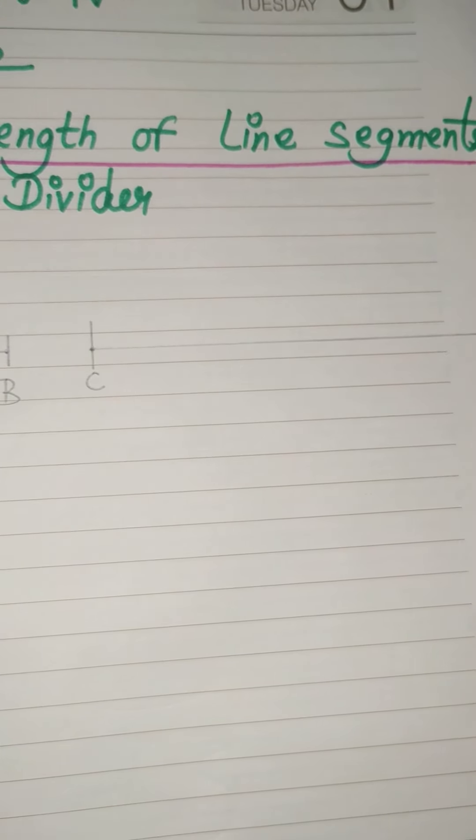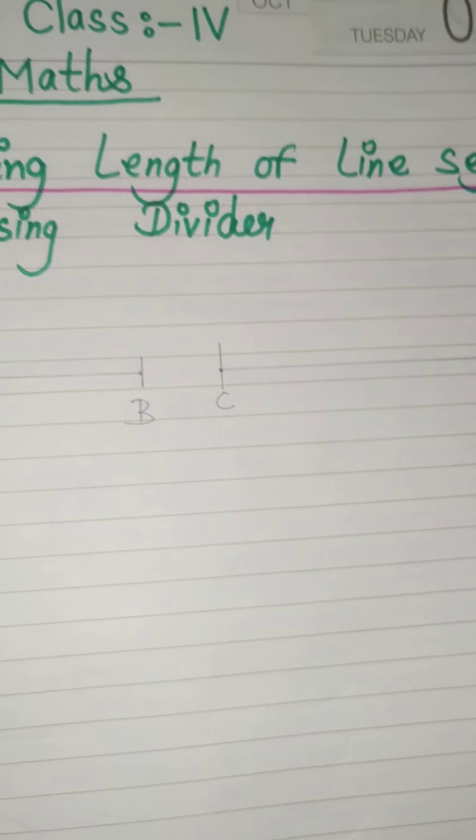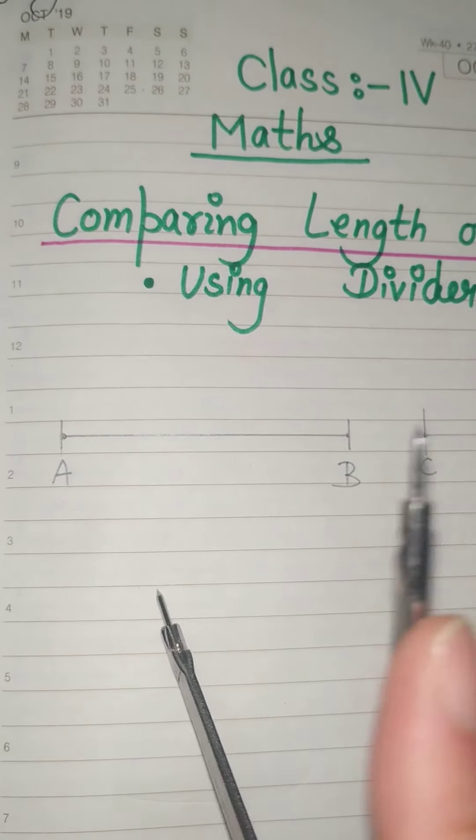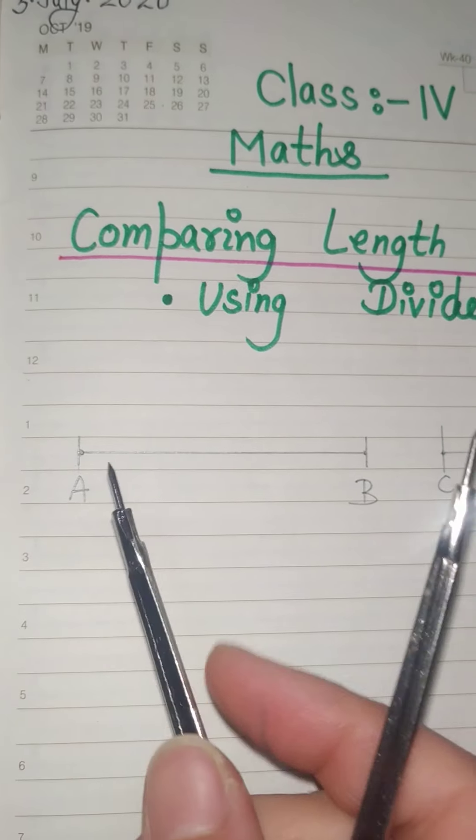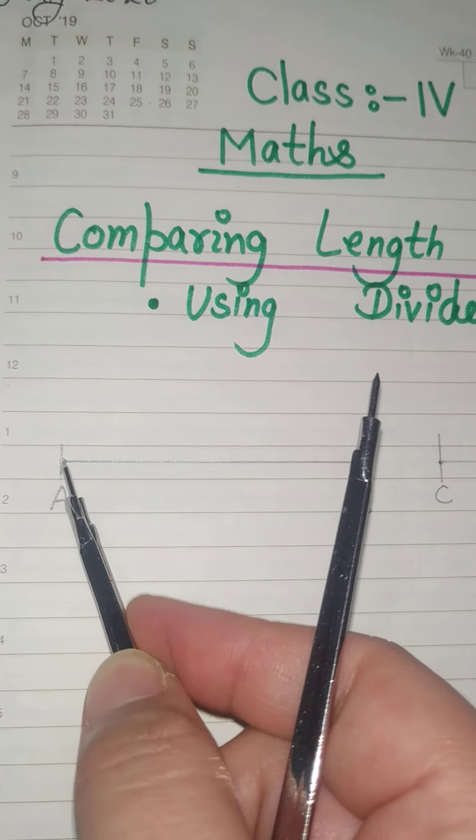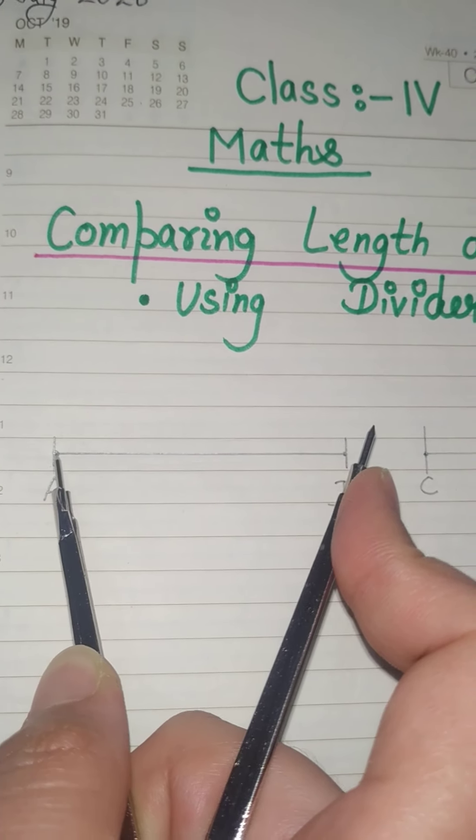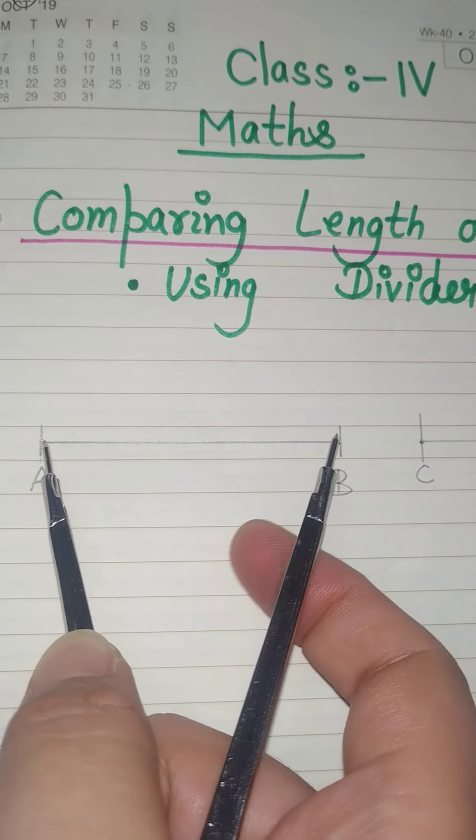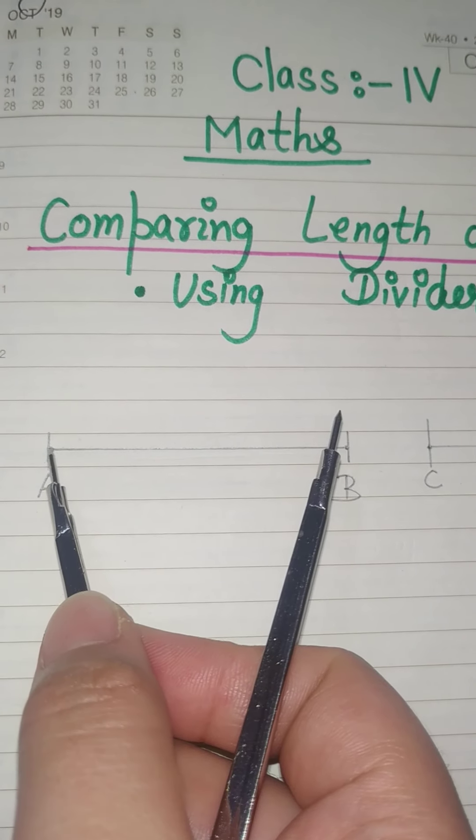So first of all, what you have to do is you have to open this divider and you have to keep one point of this divider on one end point of this line segment and the another point of this divider on the another end point of the line segment.